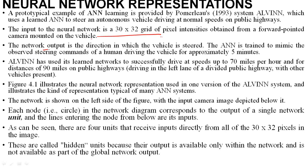The 30 cross 32 grid is nothing but 30 rows and 32 columns. A camera is mounted on the front of the car. The job of this camera is to take a picture of the front view for every millisecond.